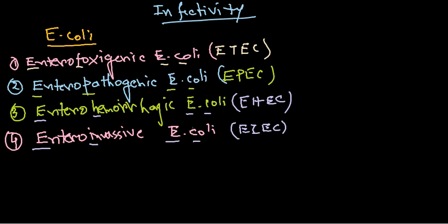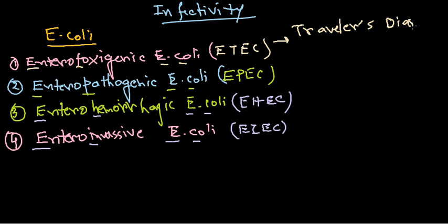The first one, ETEC — enterotoxigenic E. coli — causes what we know as traveler's diarrhea. It causes a watery diarrhea along with abdominal cramps. What ETEC does is elevate the concentration of cyclic AMP inside the cells. As a result of this elevated cyclic AMP concentration, the endothelial cells lining our gut start to lose water.